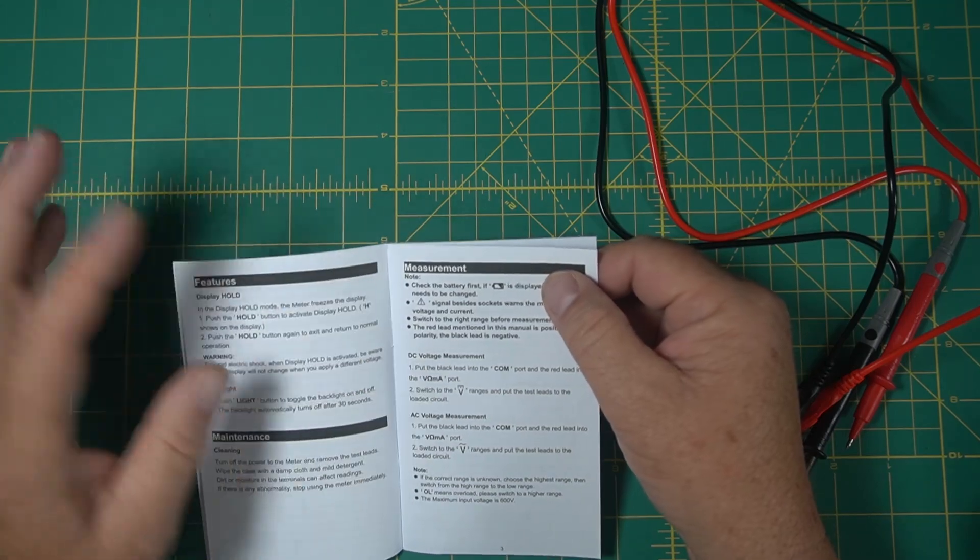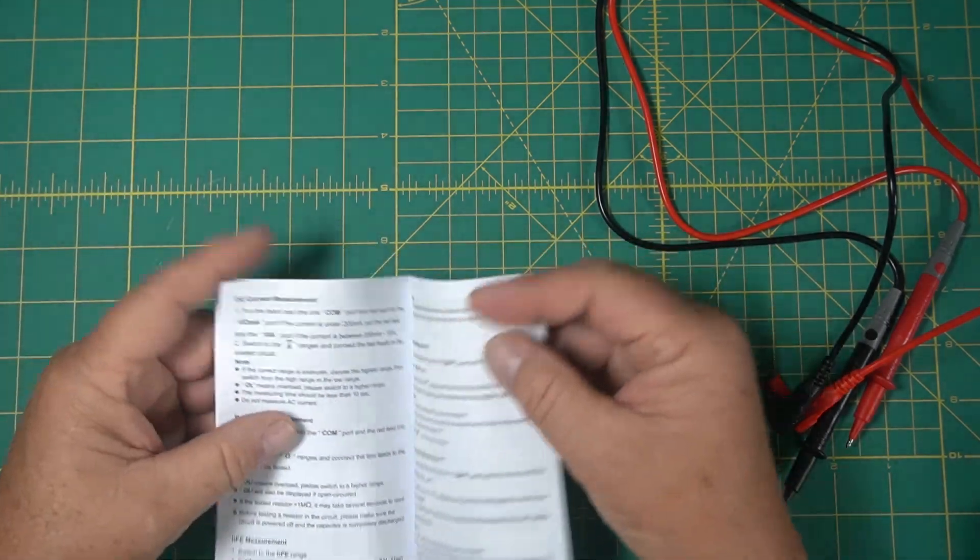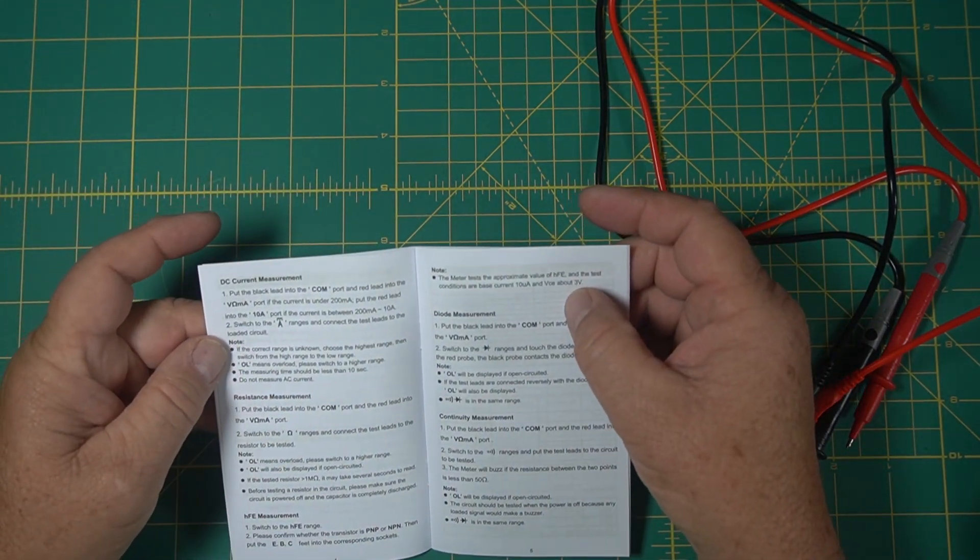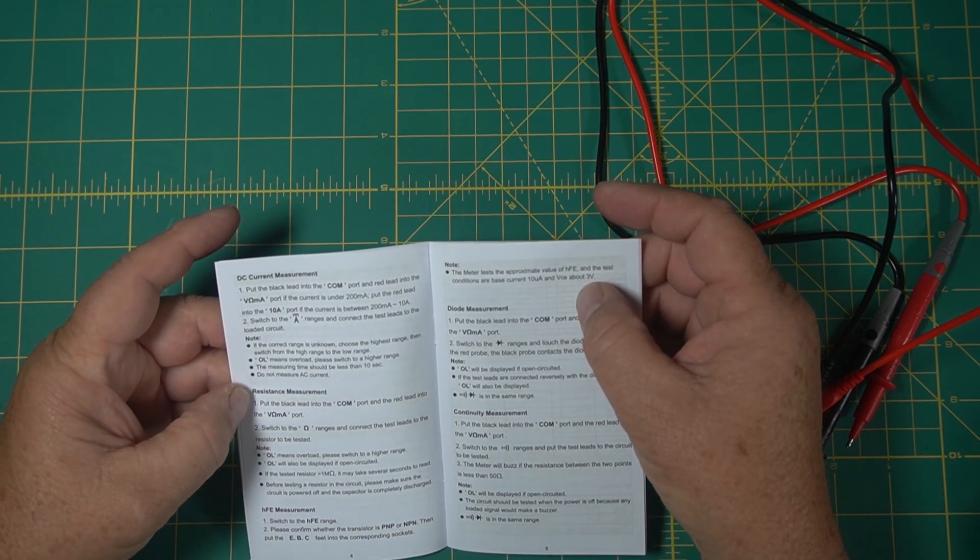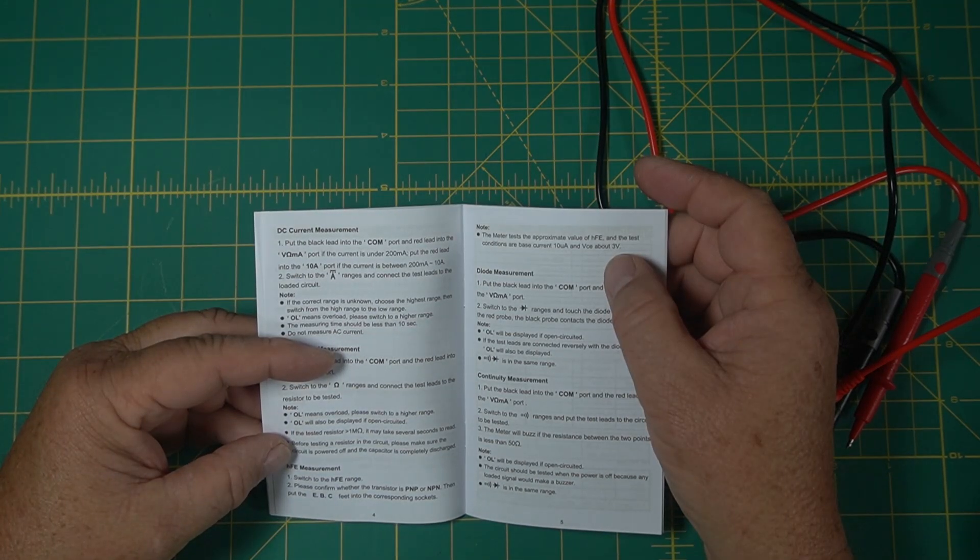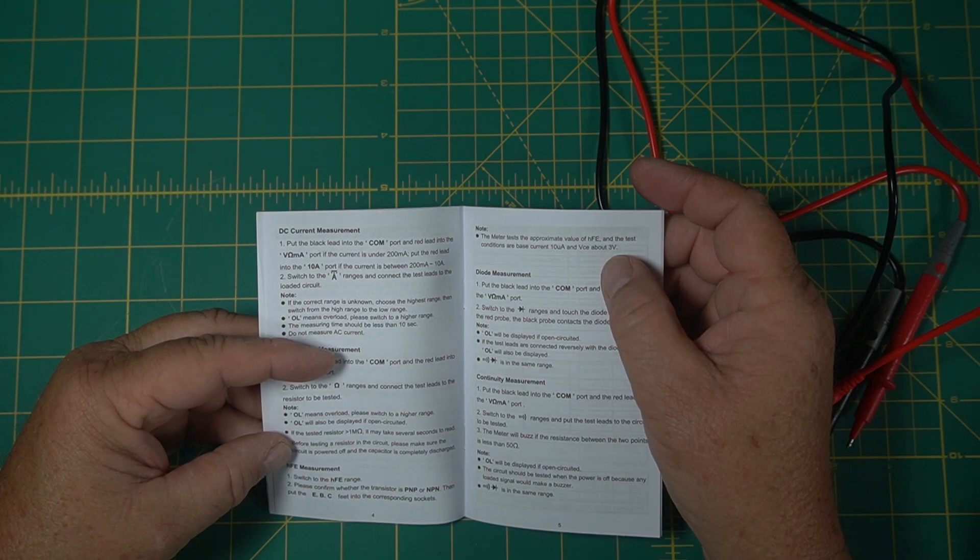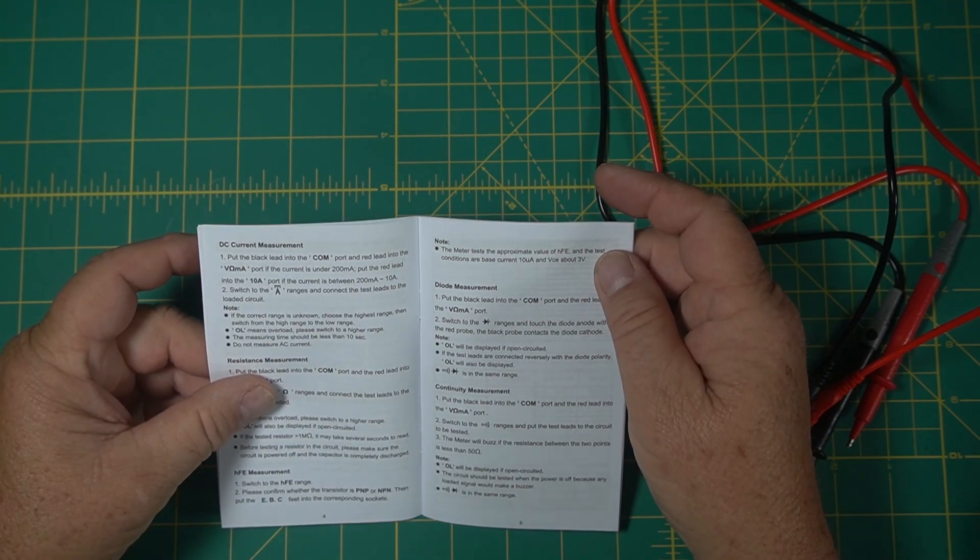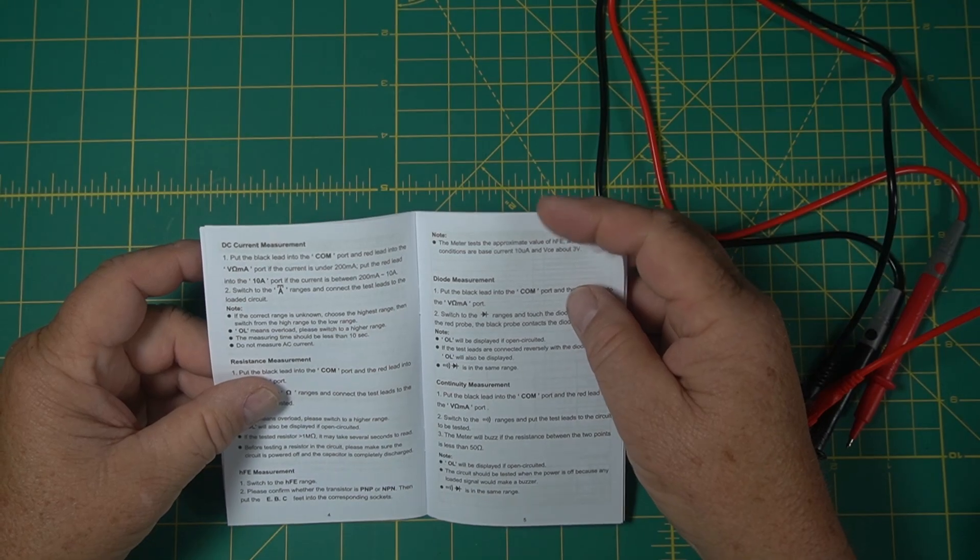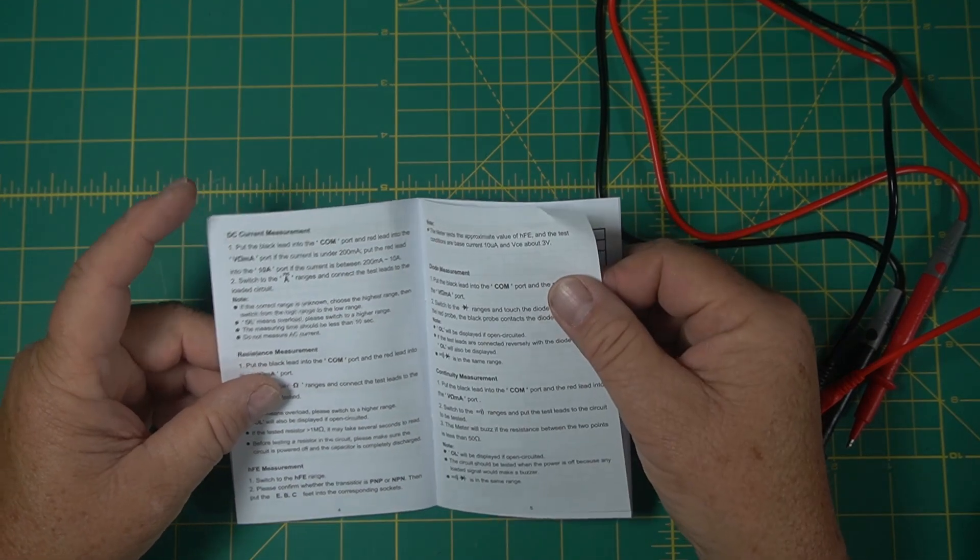So we have DC voltage measurement, AC voltage measurement, DC current measurement, resistance. I think this HFE is for transistors. A diode measurement, continuity measurement. It does have the little beeper.